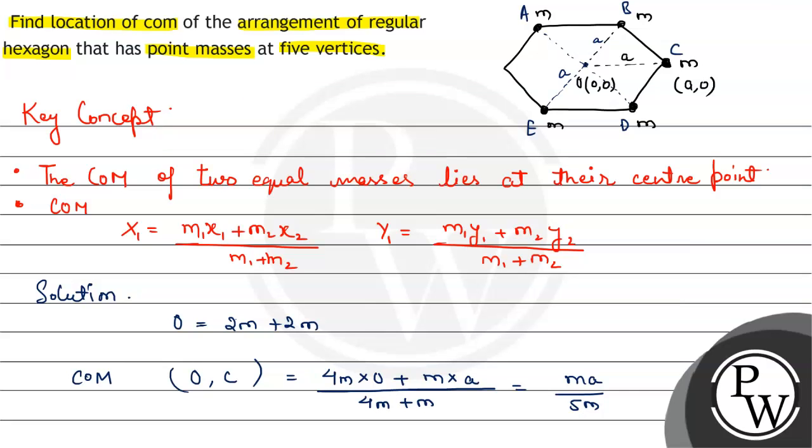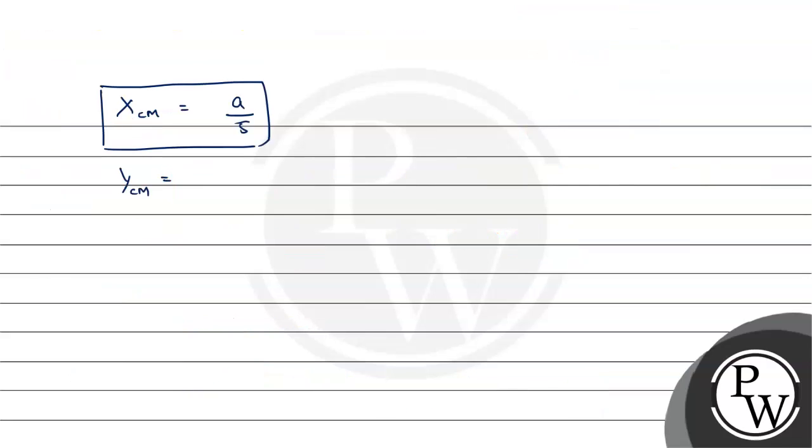So the x coordinate of center of mass is equal to a/5 from origin. And for y coordinate, the y coordinate of center of mass comes out to be equal to 0.